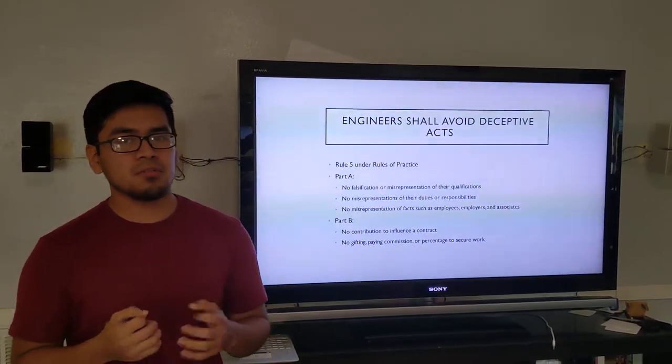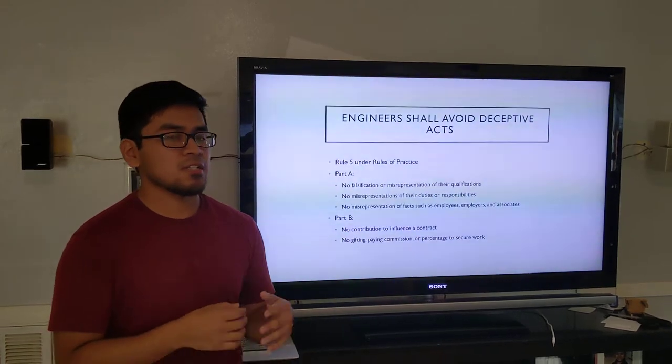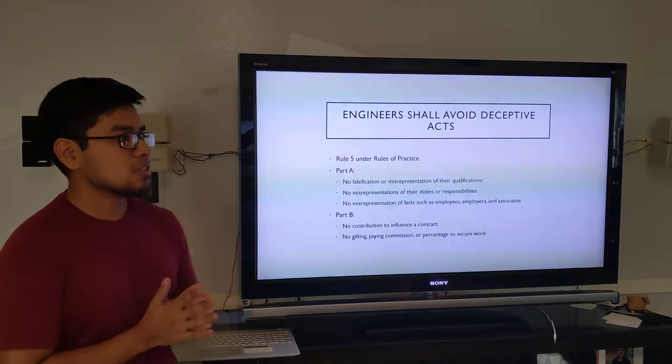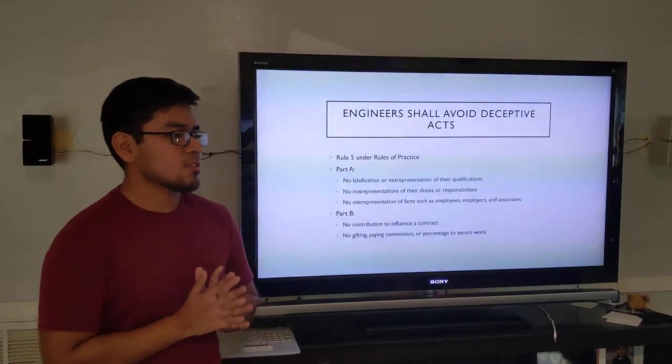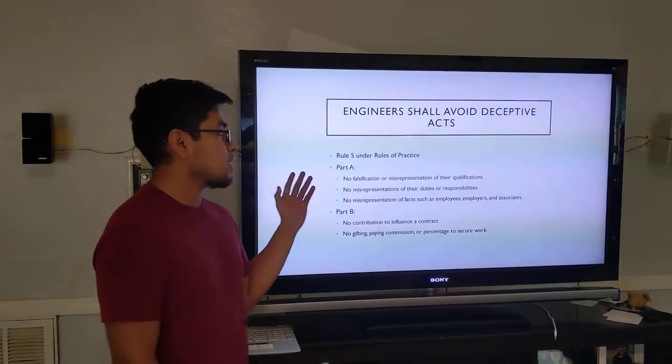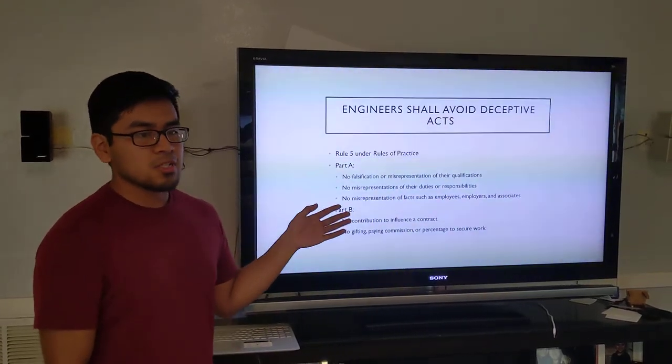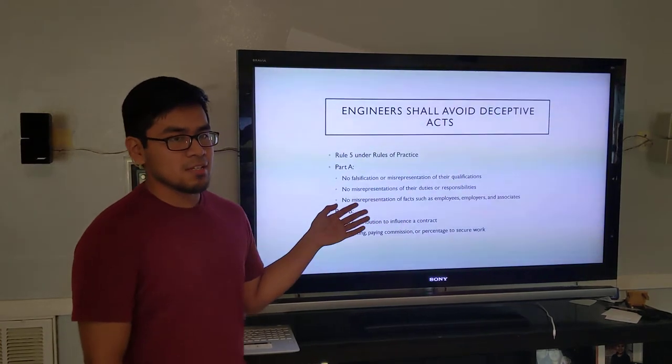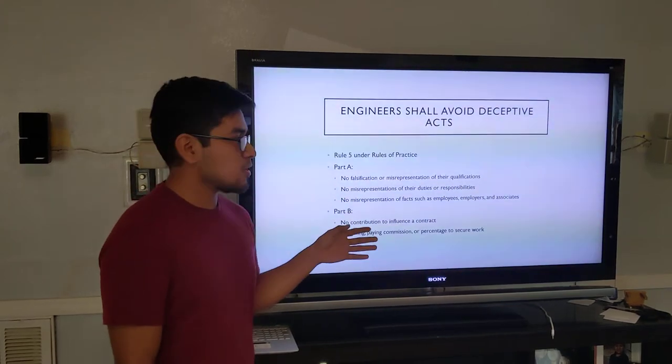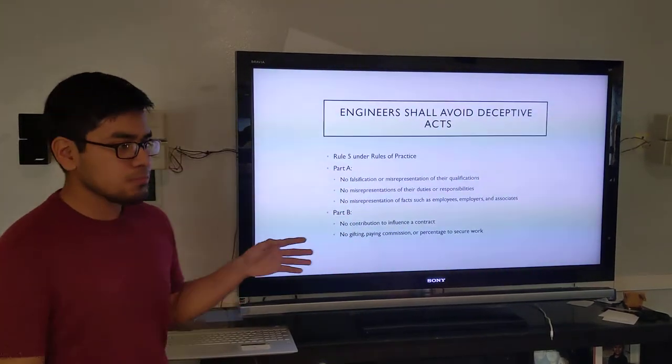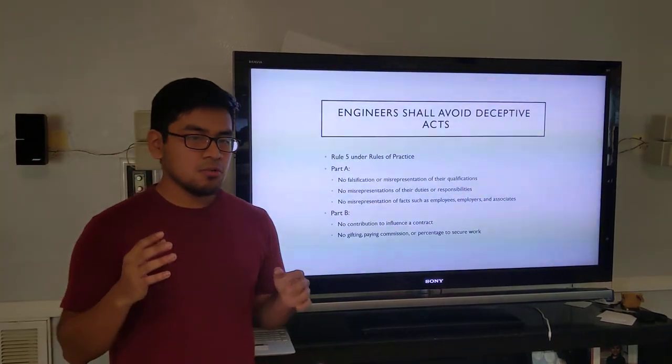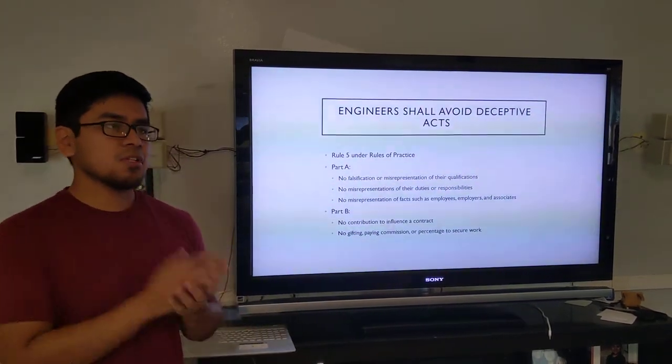One of the ways this is avoided is by engineers not lying or not misrepresenting what their qualifications are, what they can do. Instead, they have to be honest of what they can't do and act with integrity. Now, part B talks about no giving commission, no giving any type of influence in order to secure a type of job or a type of contract.